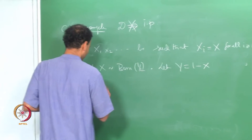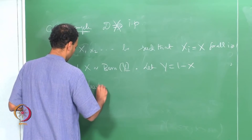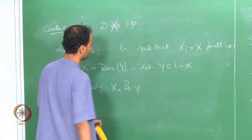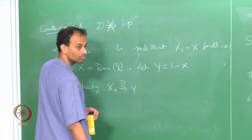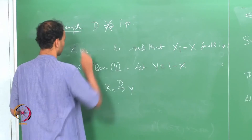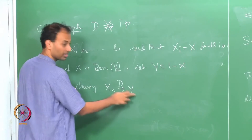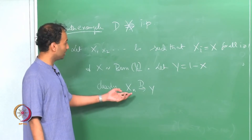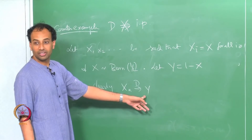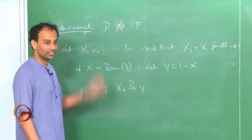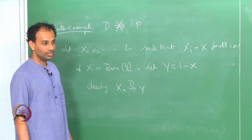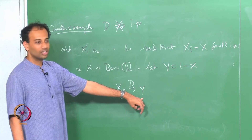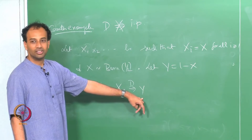The claim is that clearly X_n converges to Y in distribution, because X_n's are all Bernoulli(1/2) and Y is also Bernoulli(1/2). In fact the CDFs are all equal to F_Y since they are all Bernoulli(1/2).